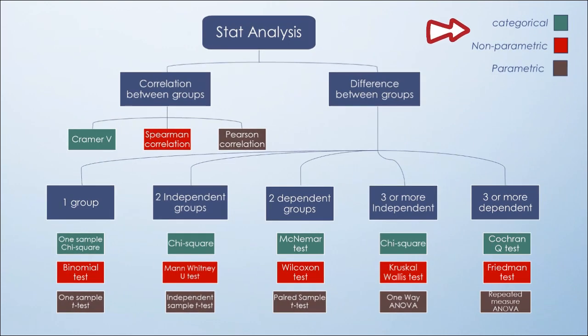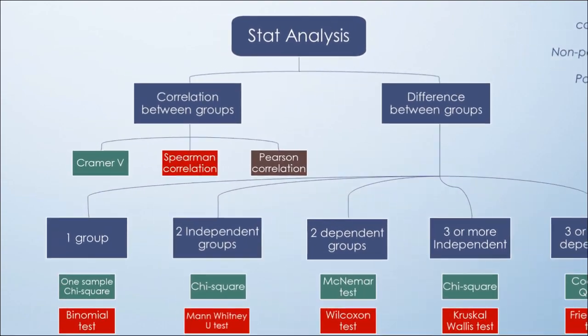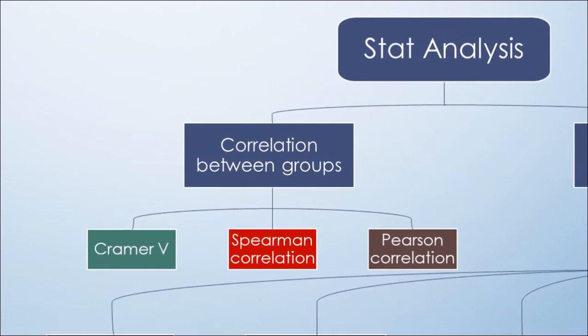Normally, inferential statistics include either correlation between data groups or difference between these groups. If you are doing correlation between groups and your data is categorical, Cramer's V is your test. For non-parametric data, Spearman correlation test is used, while Pearson correlation test is used for parametric data.